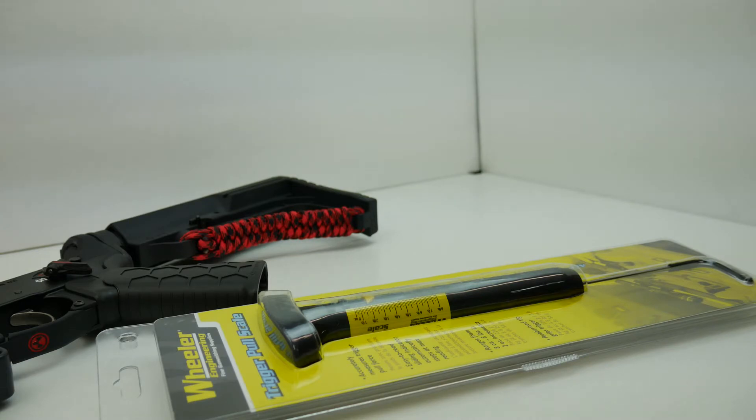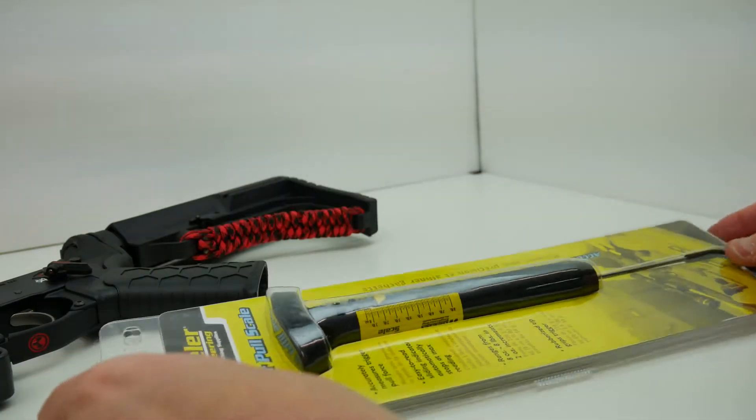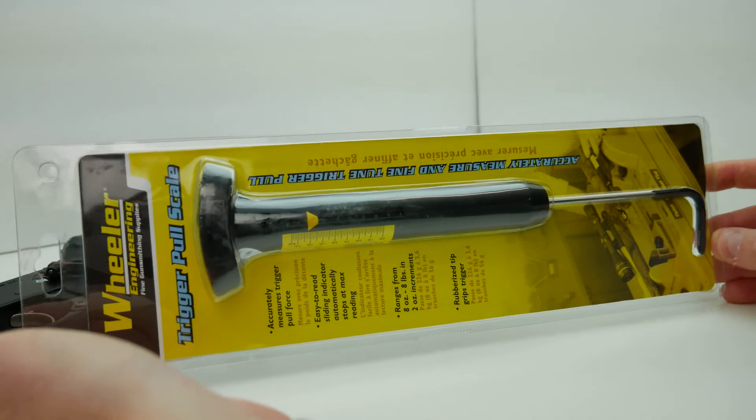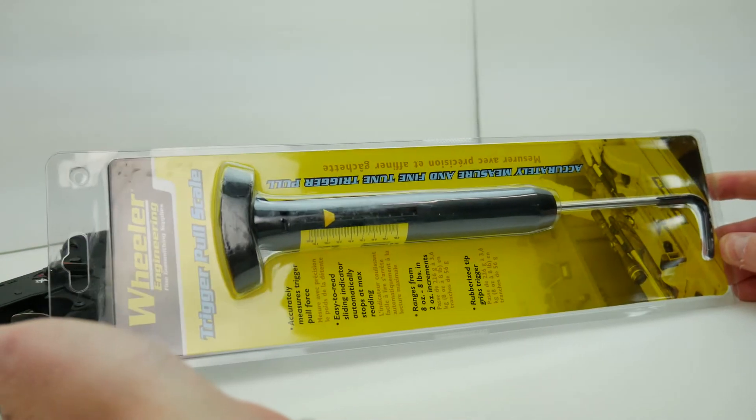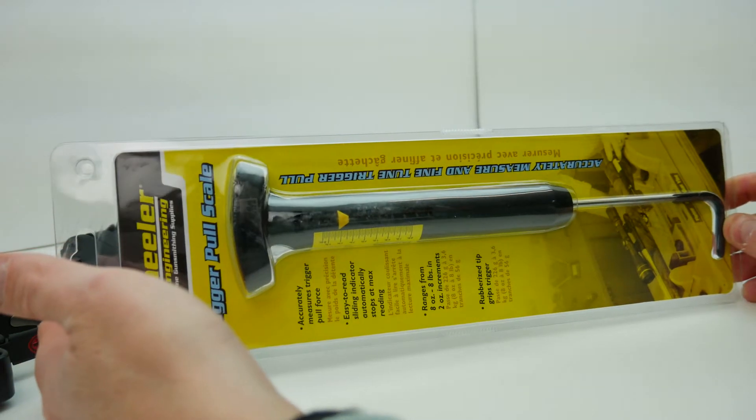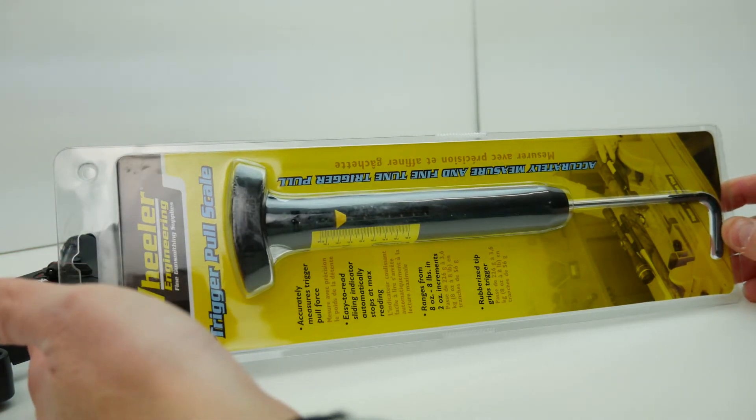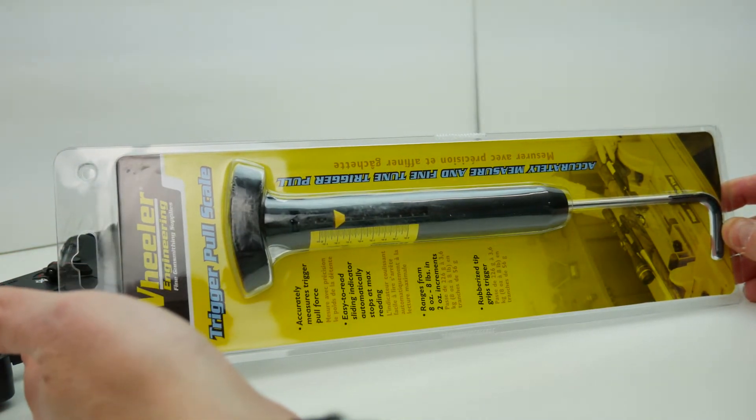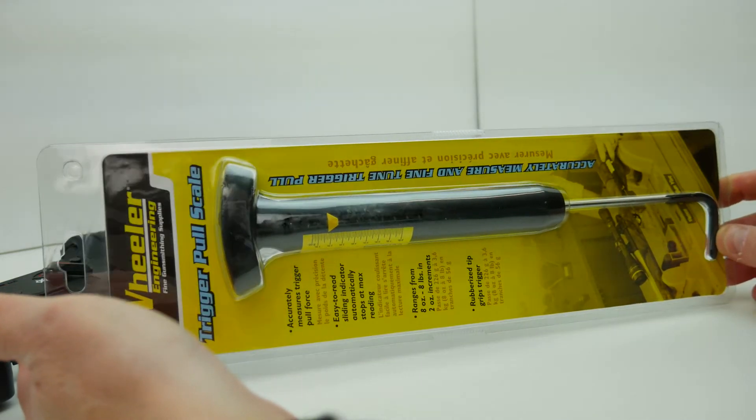You see this is typical Wheeler POP packaging here. This runs for about $20, so this is a very reasonable price for a tool to measure your trigger pull weight.